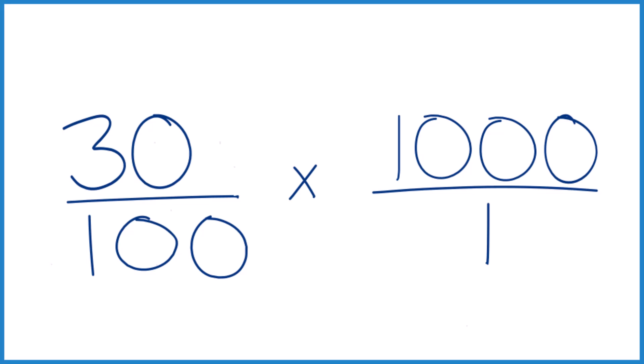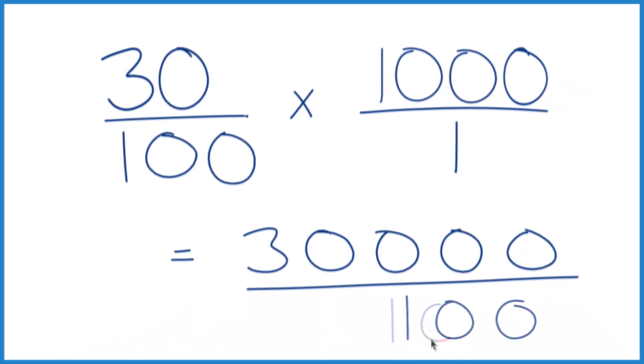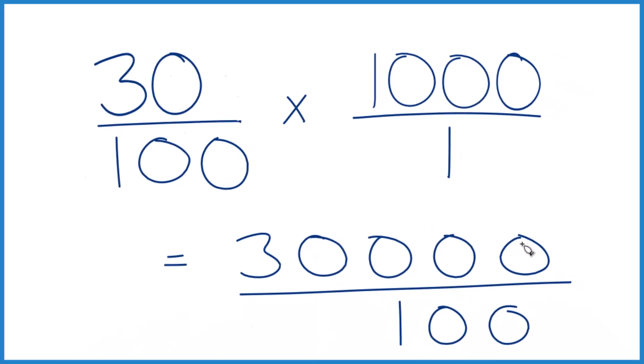30 times 1,000, that equals 30,000. 100 times 1, that equals 100. So if you divide 30,000 by 100, you get 300, just like we said before.